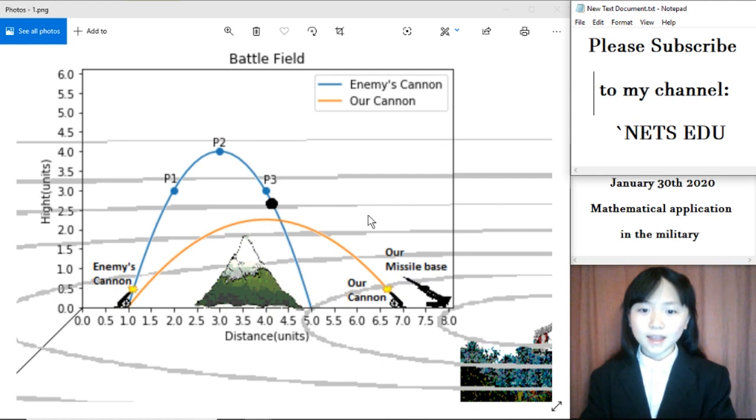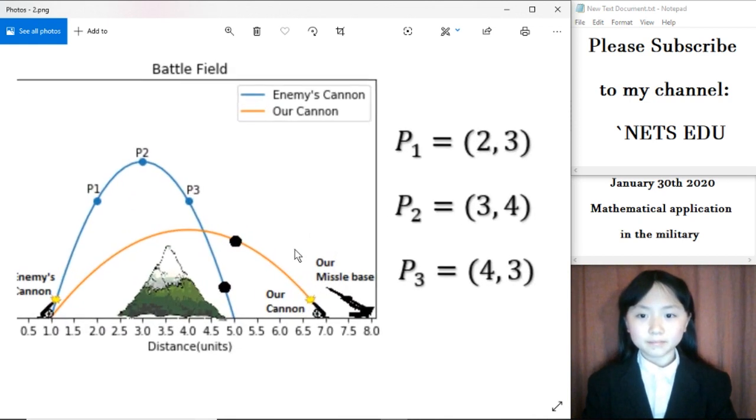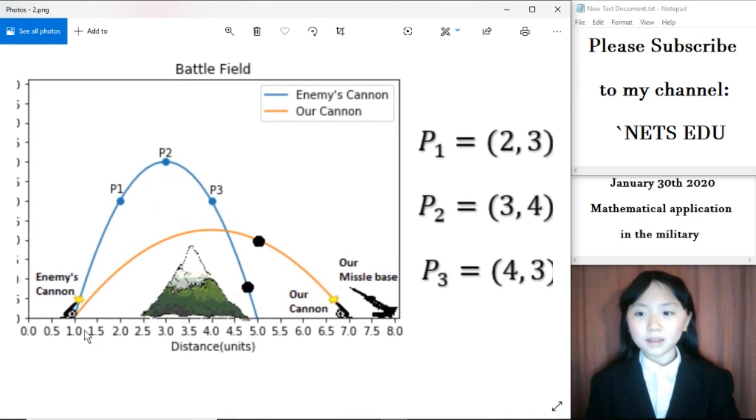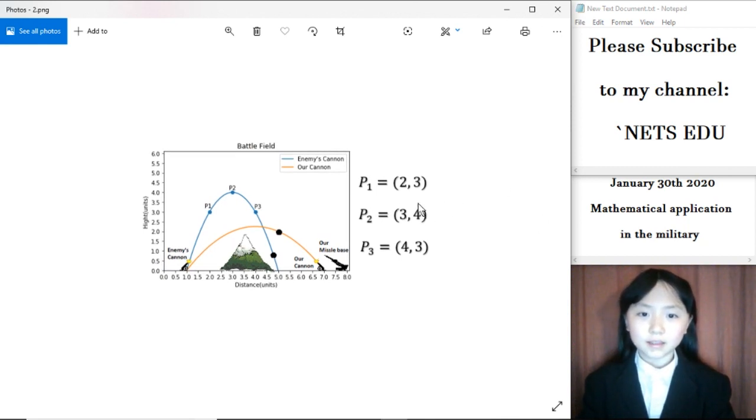Now let's have a look at how we can actually find this. Here is my imaginary battle scene. You can see we have our enemy's cannon firing a cannonball, and here are the three points of its trajectory. In this imaginary battle scene, I have very simple numbers: 2, 3 for point 1; 3, 4 for point 2; and 4, 3 for point 3. These numbers were chosen for simplicity of explaining the procedure to you and calculation since I will have to calculate these manually when I explain.